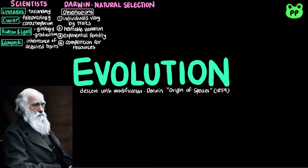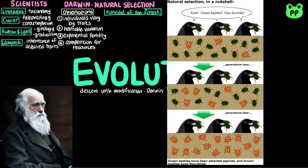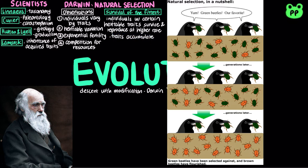Based on these observations, Darwin proposed the theory of natural selection to explain evolution, which is based on the concept of survival of the fittest, whereby individuals whose inherited traits give them a higher probability of surviving and reproducing in a given environment tend to leave more offspring than other individuals. This unequal ability of individuals to survive and reproduce will lead to the accumulation of favorable traits in the population over generations, which may eventually lead to speciation, the rise of new species.